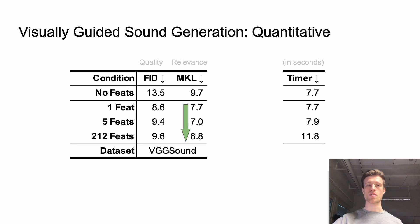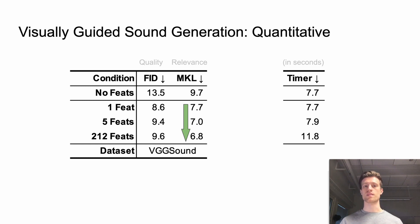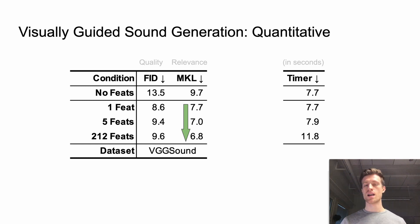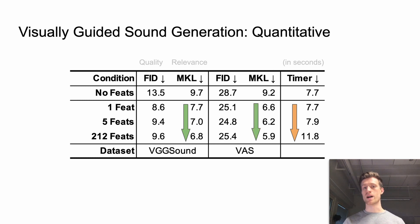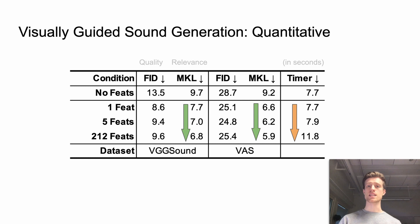Secondly, the more visual information is provided to the model, the more relevant results it produces. Notice that the relevance metric is actually in log scale, making the difference more dramatic. However, this improvement comes at the cost of sampling speed. A similar pattern can be seen on the VAS dataset.